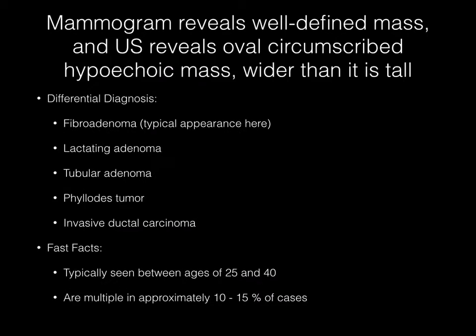The mammographic image presented here reveals a well-defined mass, and the ultrasound image demonstrates an oval circumscribed hypoechoic mass, which is wider than it is tall. Your differential diagnosis should include fibroadenoma — this is a typical appearance here — but you can also include lactating adenoma, tubular adenoma, phyllodes tumor, and invasive ductal carcinoma.